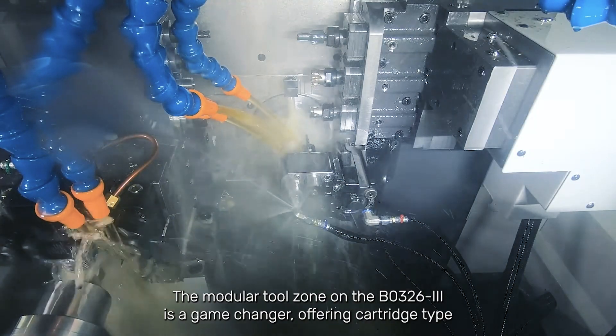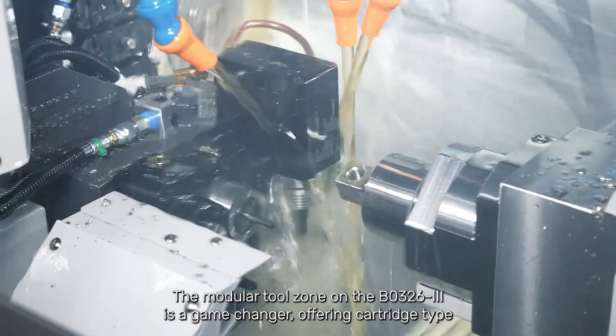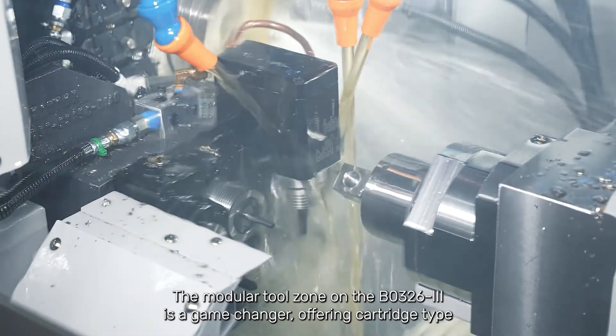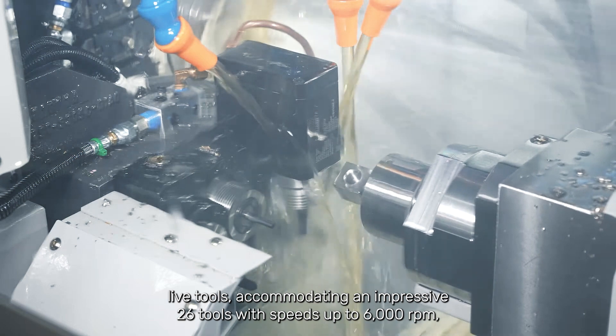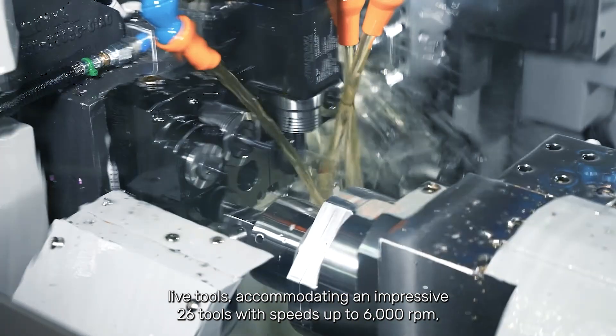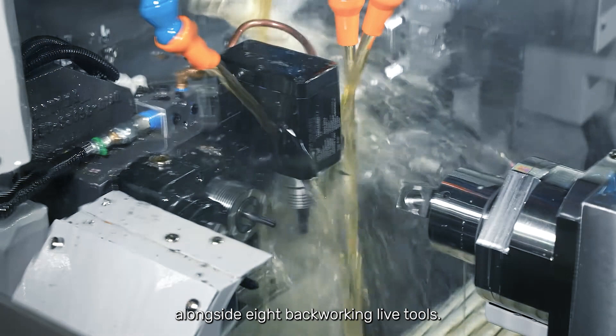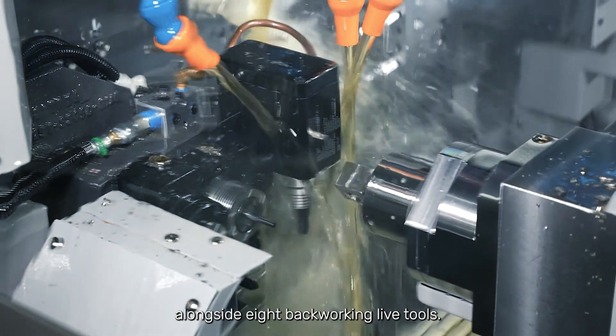The modular tool zone on the BO326 is a game-changer, offering cartridge-type live tools, accommodating an impressive 26 tools with speeds up to 6,000 RPM, alongside 8 back-working live tools.